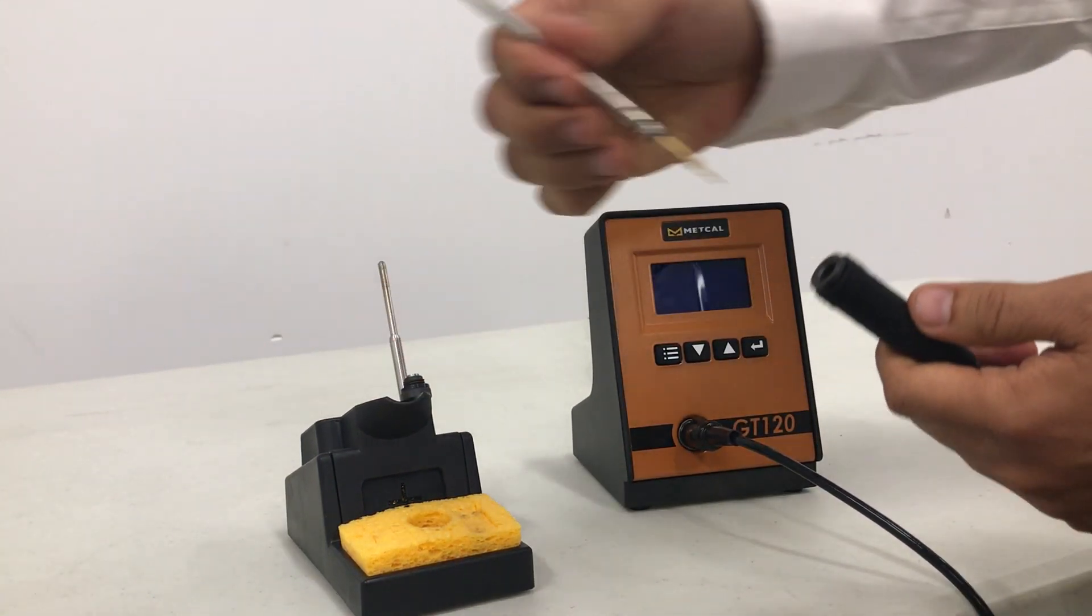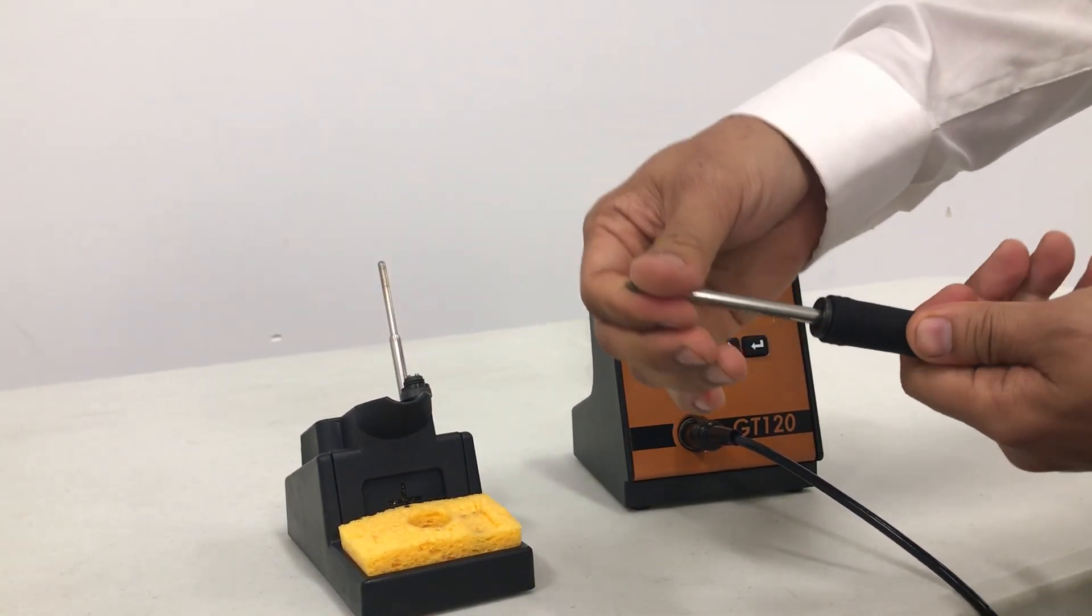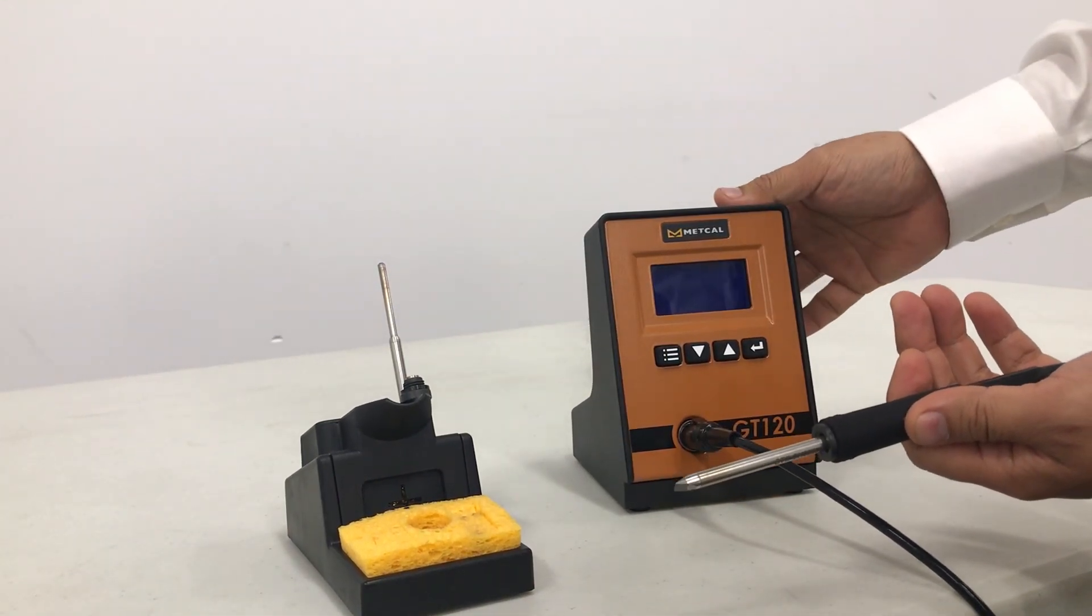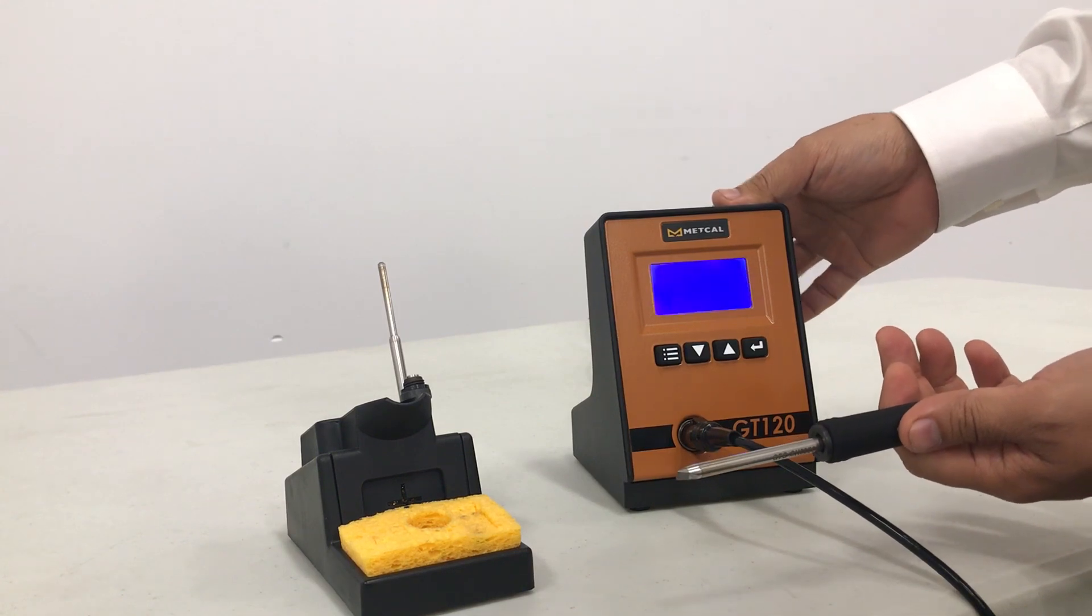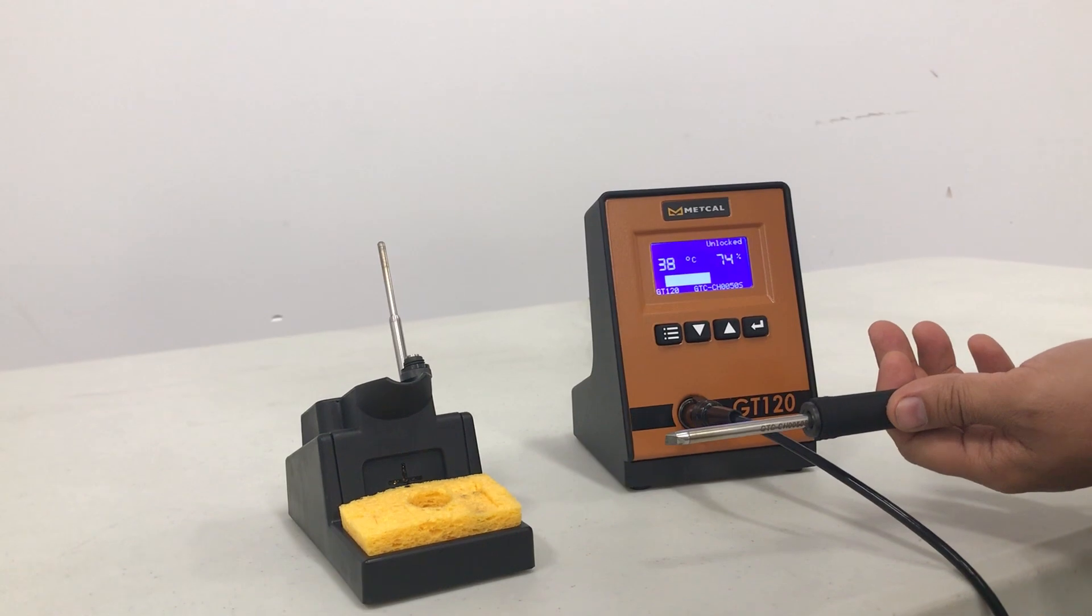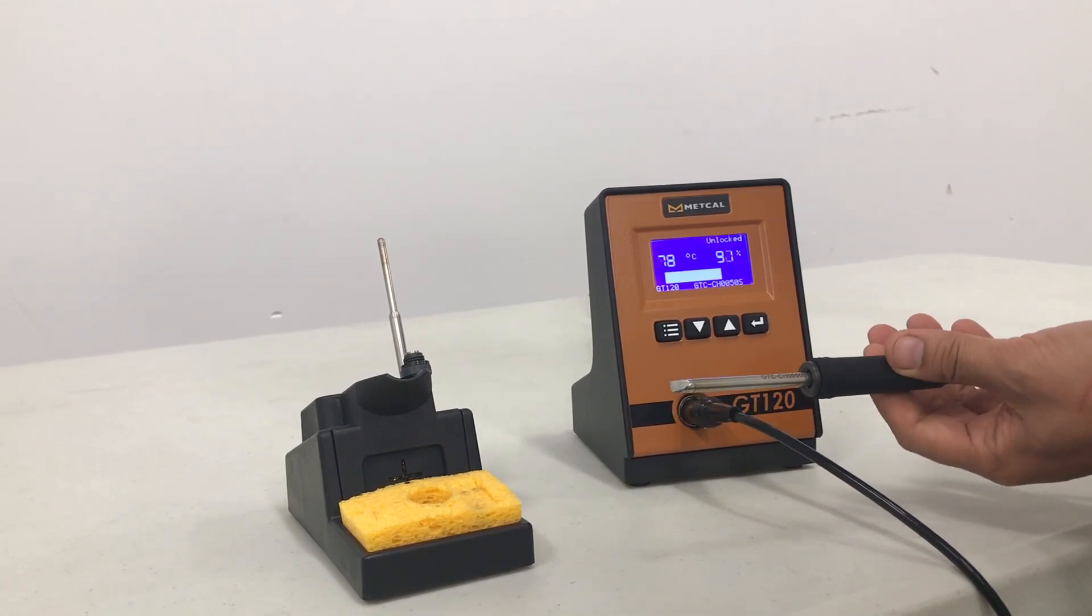Now with the cartridge, we're going to insert it into the handpiece. We're going to turn on the unit. You can see that it's heating up and now the cartridge is ready to go.